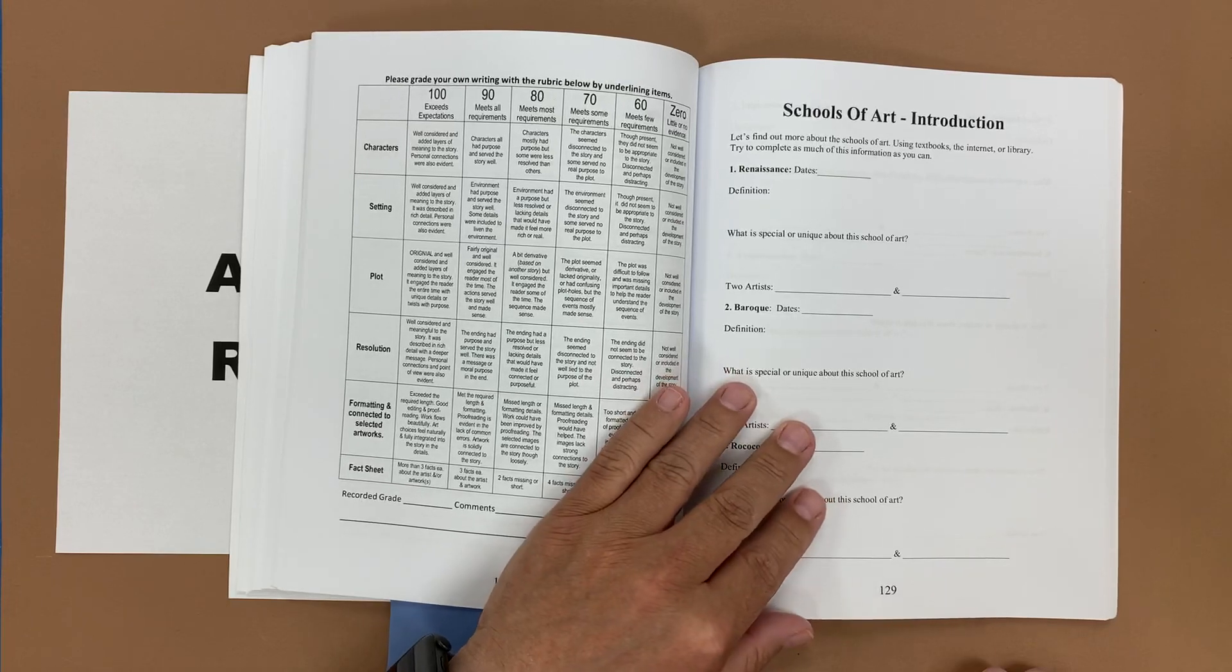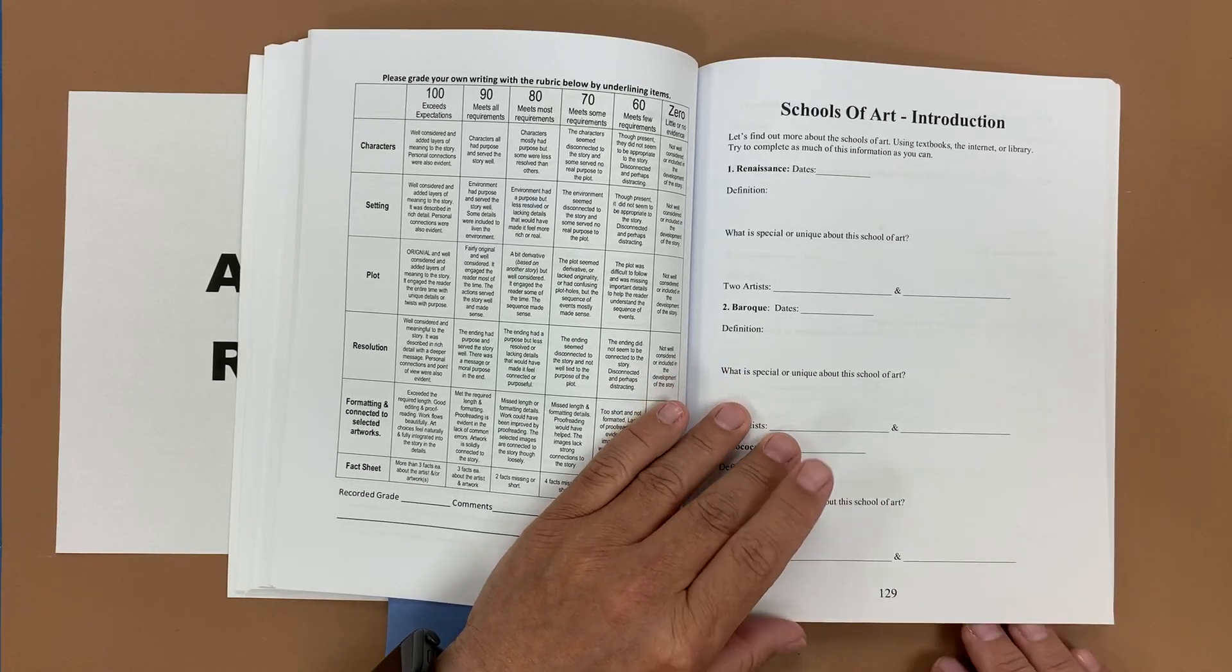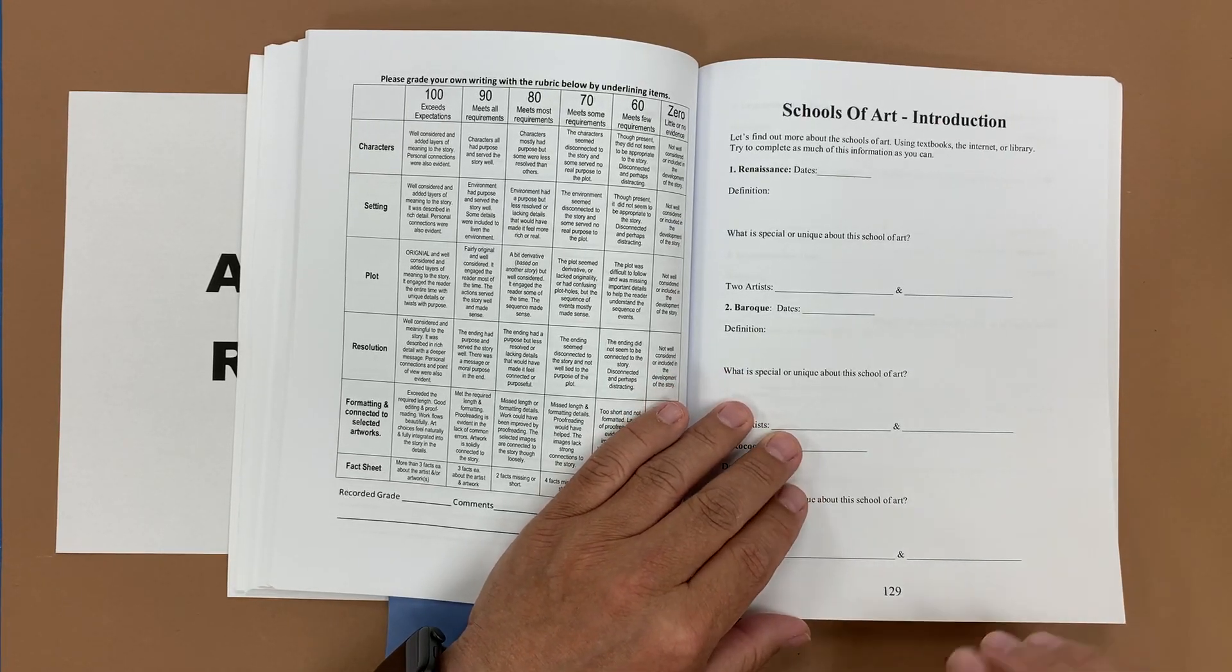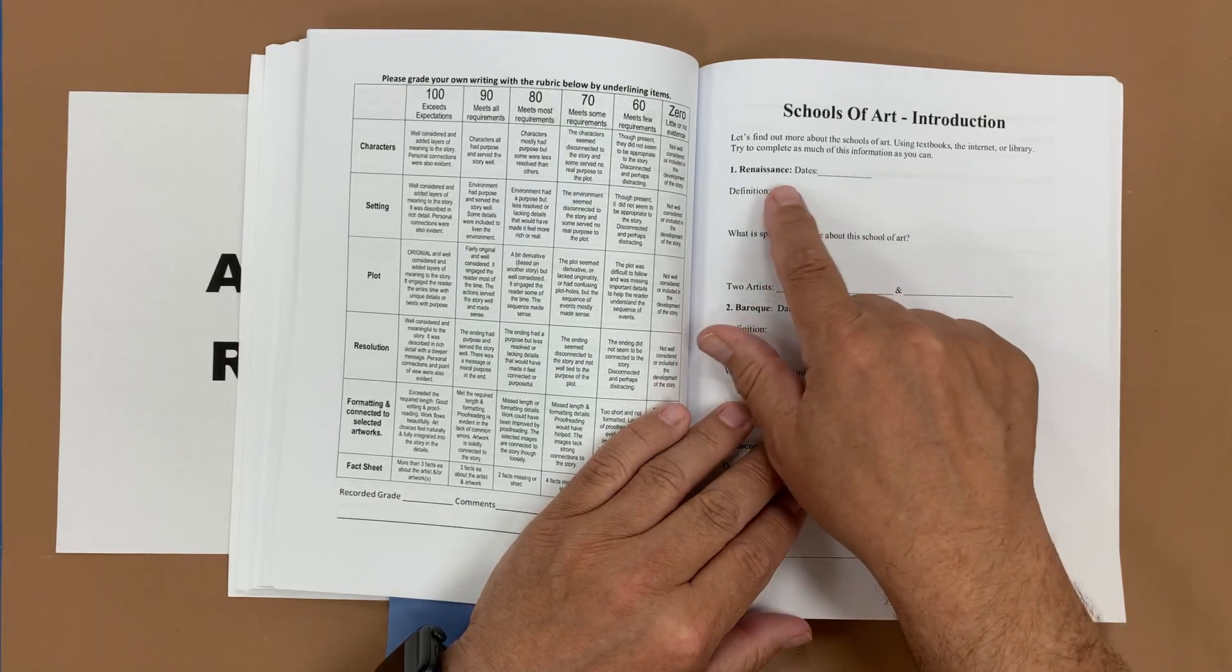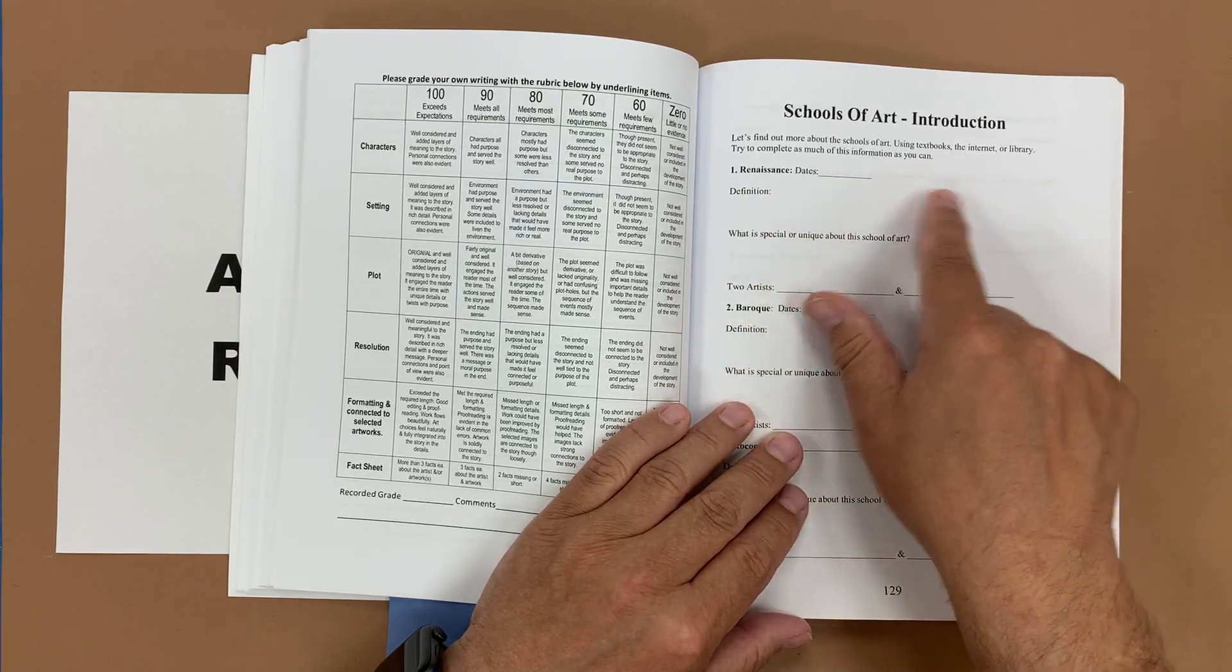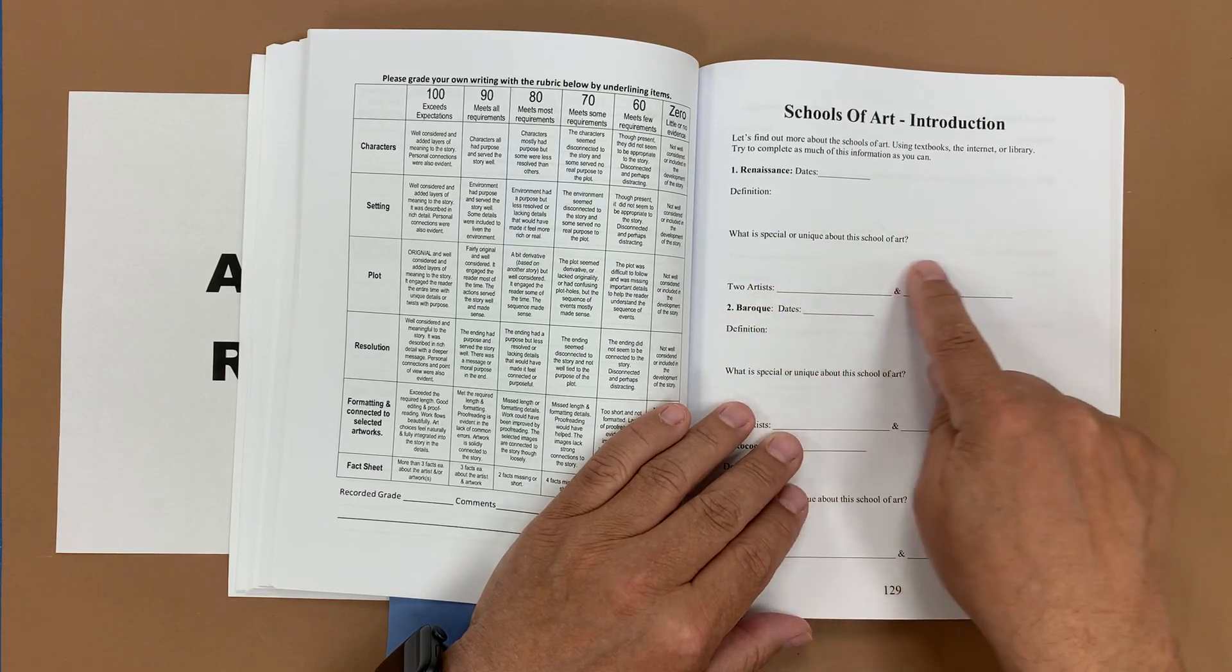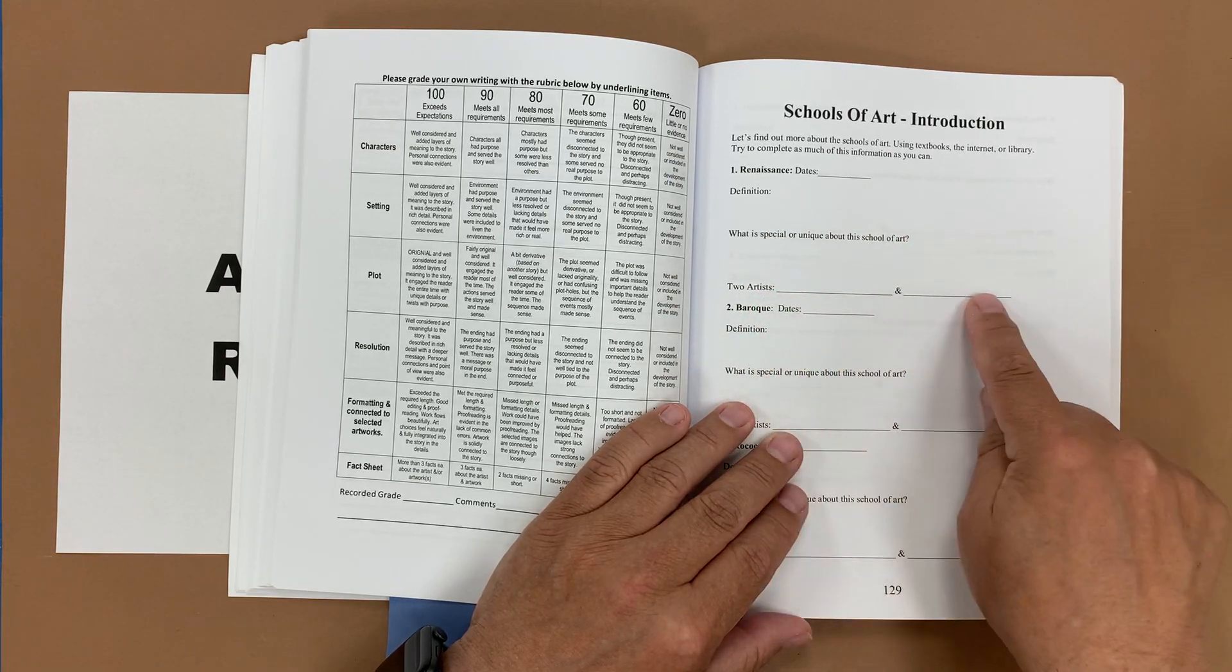As you explore the different schools of art I have a video series that you can use. It is linked within the book in the teacher's edition where students would look up the Renaissance, put in the dates, define it, what is special or unique about the Renaissance, and then naming two artists.